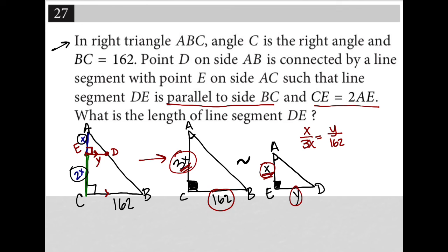So then simplifying this, my X's are gone. So I'm left with 1 third equals Y over 162. I can cross multiply here to get 3Y equals 162. Then I can divide both sides by 3 to get Y equals 162 divided by 3 is 54. So there's my answer, right? So the length of DE here is 54.